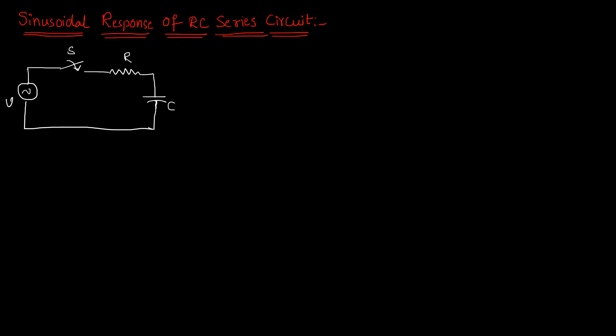Hello everyone. In this video we are going to learn about sinusoidal response of an RC series circuit. You can observe the RC series circuit, and this combination was excited by an input sinusoid, voltage V. Let us assume this voltage V as V = V cos(ωt + θ). This excitation was given to the combination RC through a switch.